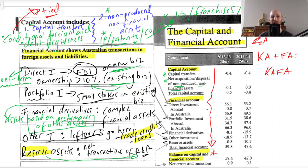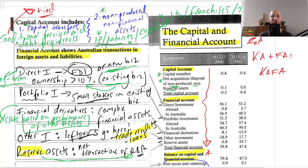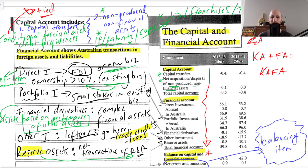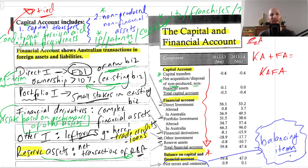One important item to note is net errors and omissions, which is known as a balancing item. Sometimes the numbers don't match up perfectly, so this item is included to deal with statistical variation and issues related to the floating exchange rate — helping make the numbers balance for statistical purposes, since they don't always balance neatly in real life.